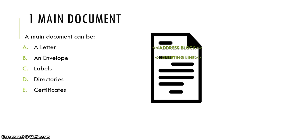The main document can be a letter, an envelope, it could be labels, it could be directories, or it can be certificates.